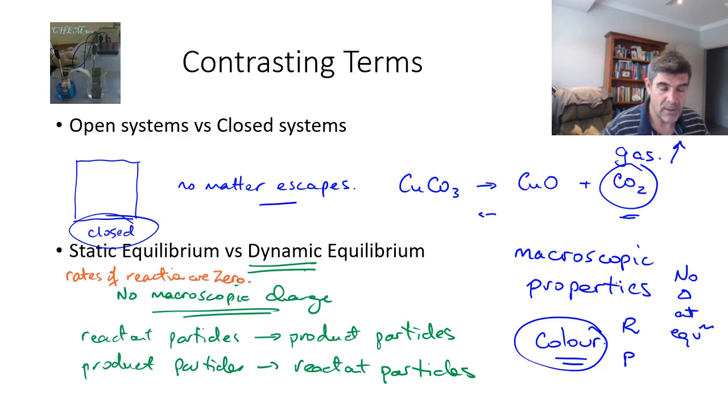You can think of a chemical reaction that's gone to completion as effectively a static equilibrium. There is no more change, there is no macroscopic change, there are no more bubbles being produced, no changes in colour, but that's because there's no reaction occurring at all. There's no products forming reactants, and there's no reactants forming products. This would be a static equilibrium.